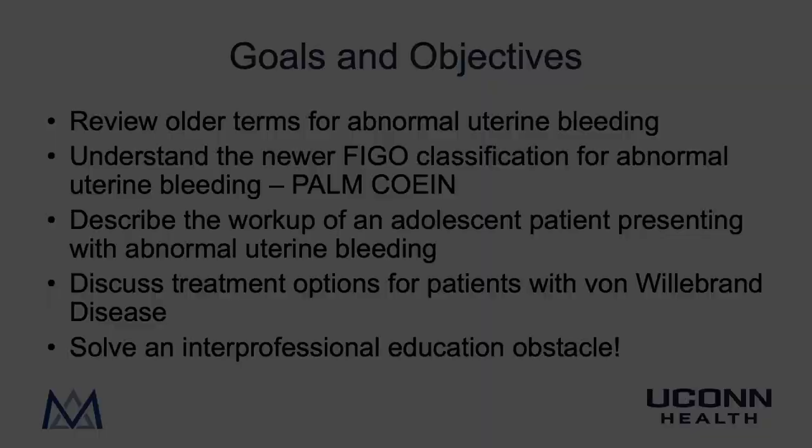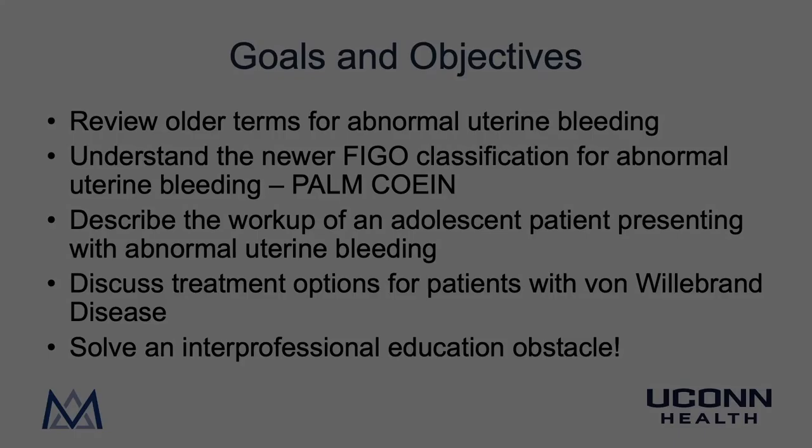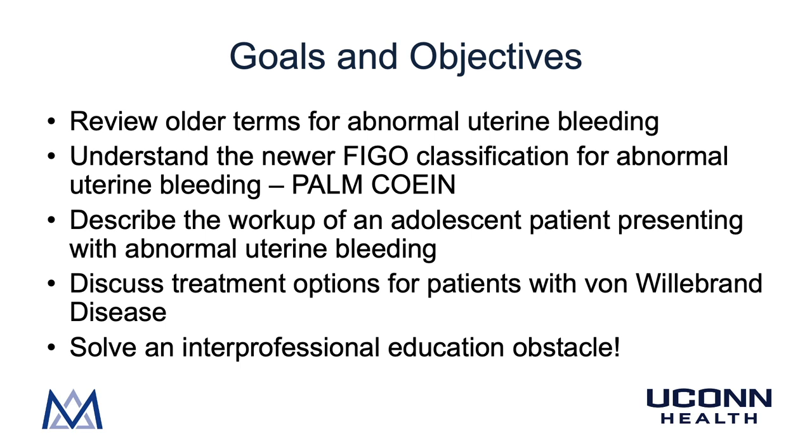Great job taking care of our patient LB, who presented with abnormal uterine bleeding caused by type I von Willebrand disease. We were able to get her good care without putting her parents into extreme debt by working with our hospital financial counselor. Let's once again review our goals and objectives: review older terms for abnormal uterine bleeding; understand the newer FIGO PALM-COIN classification; describe the workup of an adolescent patient with abnormal uterine bleeding; discuss treatment options for patients with von Willebrand disease; and solve an interprofessional education obstacle. We hope you found this video educational. Thanks for watching, good luck with your studies, and we'll see you around. Bye-bye.